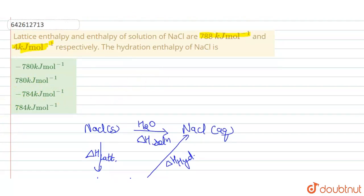So the delta H hydration is -784 kJ/mol. The final answer for the question is option C: -784 kJ/mol.